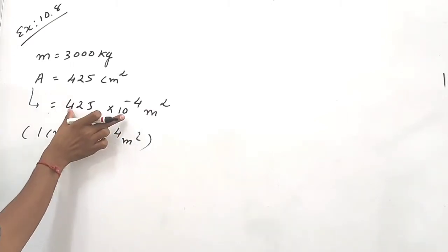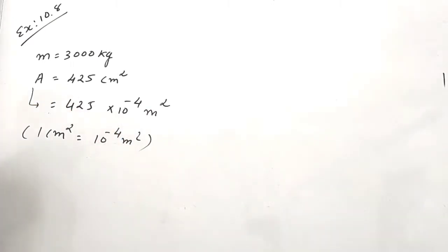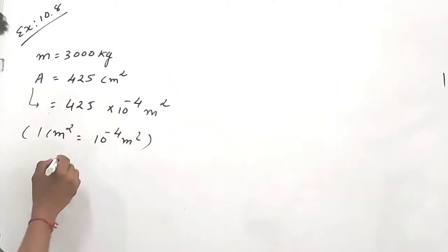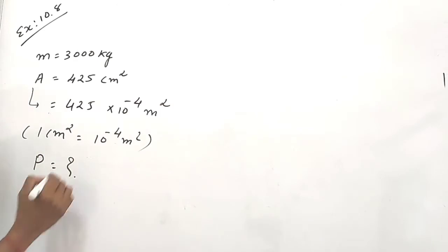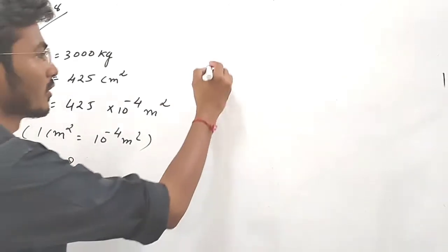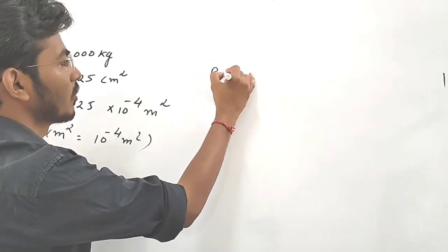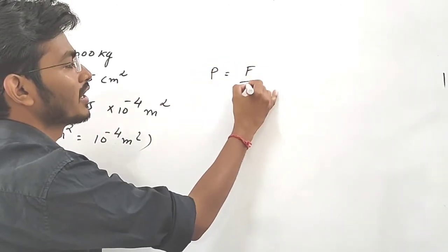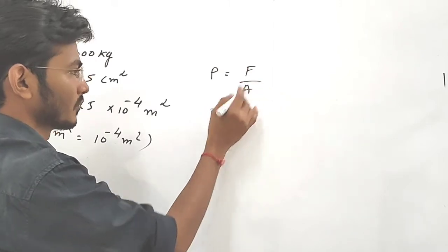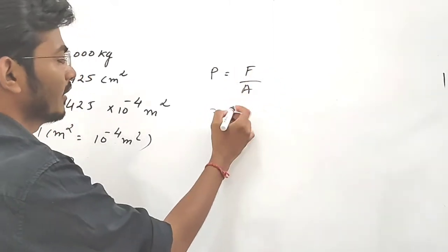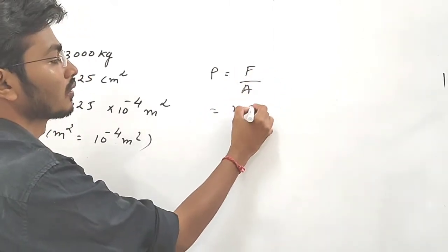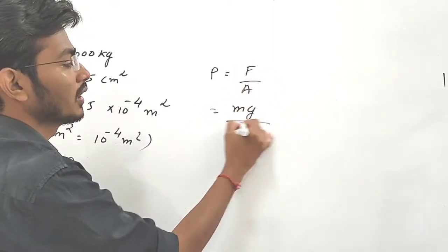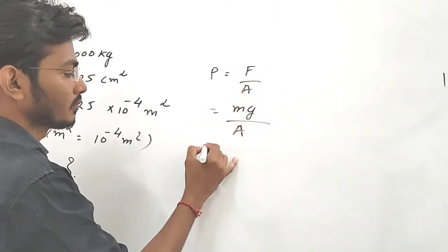Based on that, we calculate. Now we have to find pressure P. Pressure P is equal to F divided by A, which means P = mg divided by A.